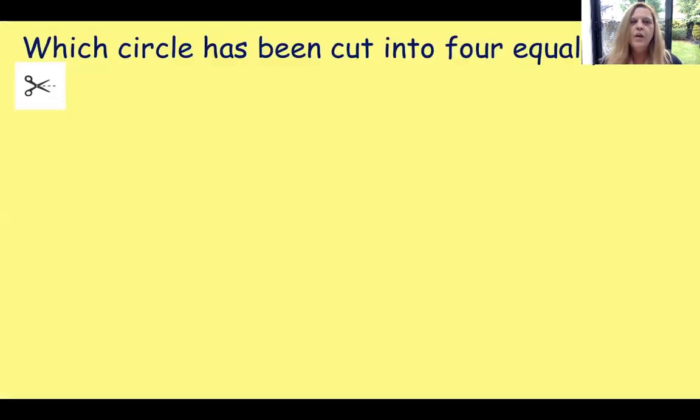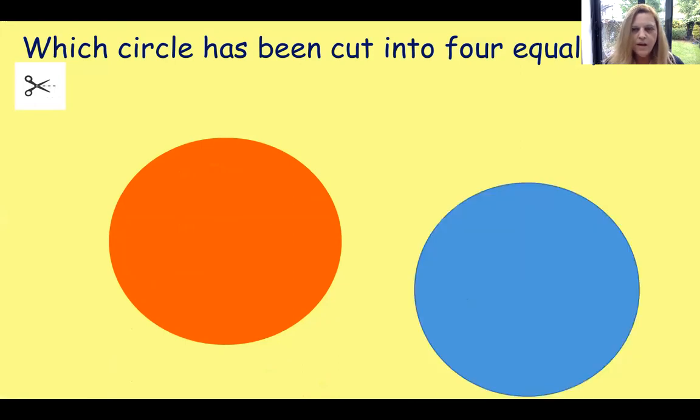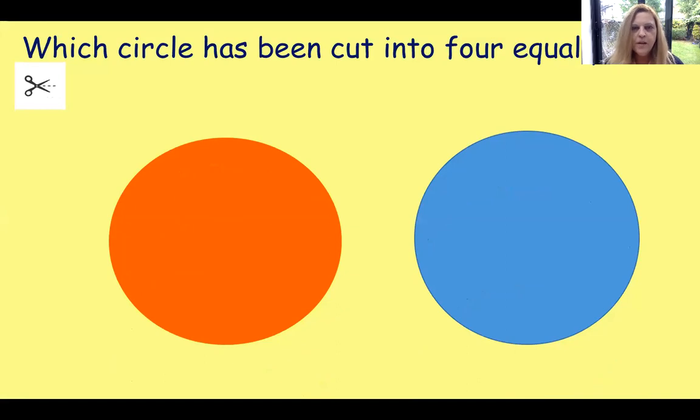Which circle has been cut into 4 equal pieces? Let's see. There's one circle, a nice big orange one. Looks a bit like the sun. And a blue one. Looks like the blue balloon. And we've got our scissors and we're going to cut down there. And then we're going to cut across there. And then we're going to cut the blue one. Ooh, the same down the middle. And then we're going to cut another strip. So which one have we cut into 4 pieces all the same? Well, the blue one we've only cut into 3 pieces. Whereas the orange one we've cut into 4 pieces. And each piece would be the same. So the orange one is correct.